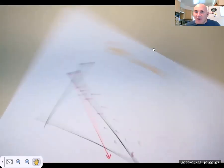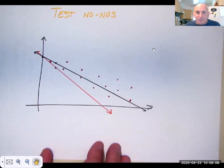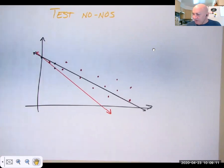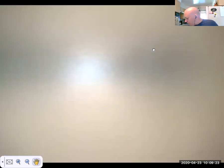A couple of test and quiz no-nos. If you graph a regression equation like this for these data points, you've done something wrong. So that was your algebra one review, how to graph a line.